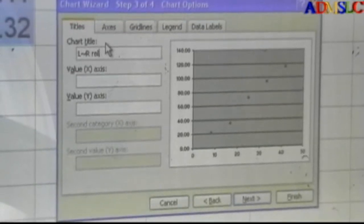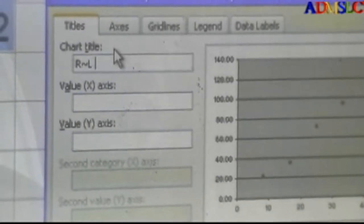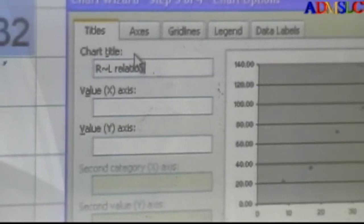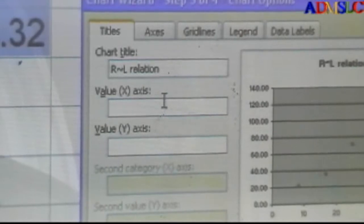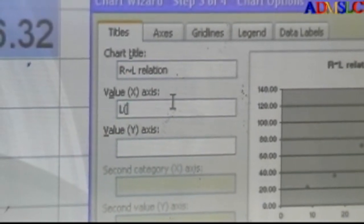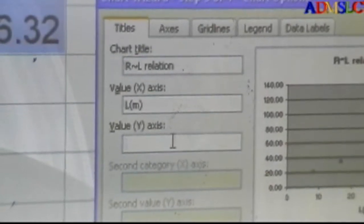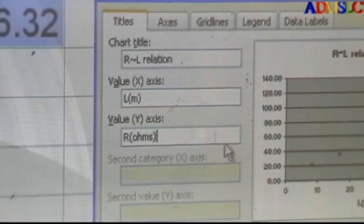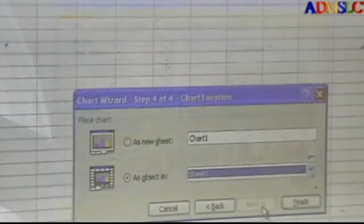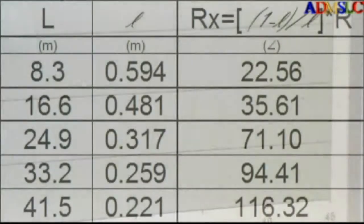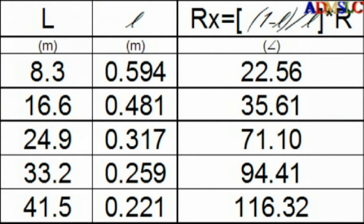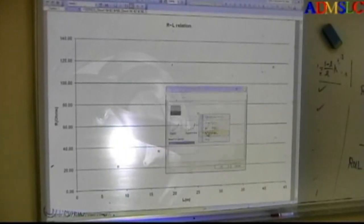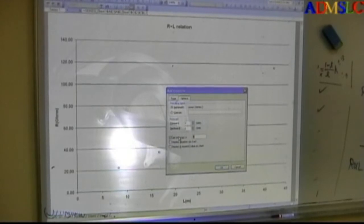This is the title. The X axis is L in meters. The Y axis is R in ohms. Next, next. Let's make it a new sheet, it's better. Finish. So I will make here clear. You see, these are the points. So I will select one point, add trendline. So this is straight line. I will make it through origin and display the equation and display the R squared.